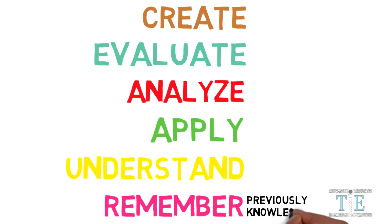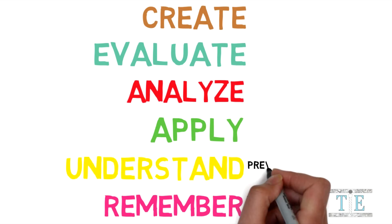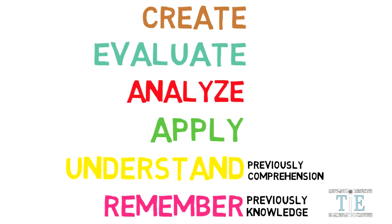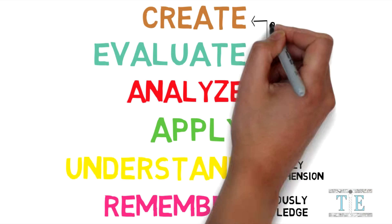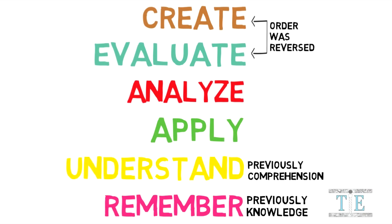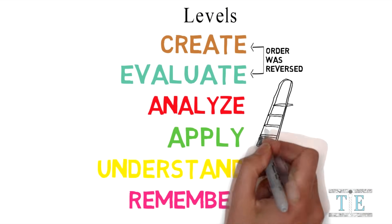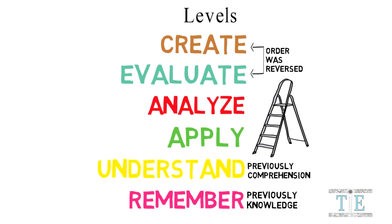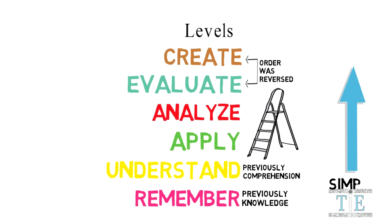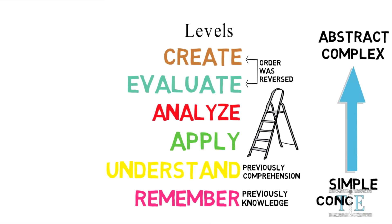Remember was first known as knowledge, but later revised. Similarly, understand was previously called comprehension. And lastly, the order of create and evaluate were switched. Bloom's Taxonomy is actually a hierarchy where students must first master the lower levels before mastering the higher levels. The lower levels are relatively simple, while the higher levels represent more complex cognitive rigor and are more abstract as well.